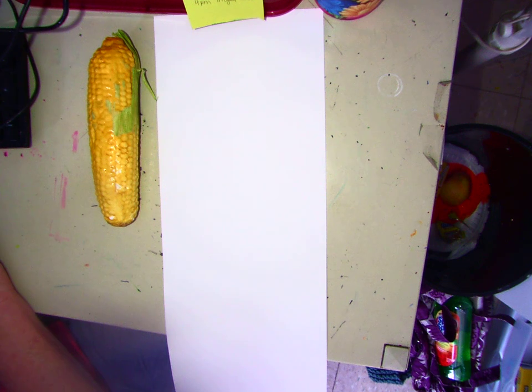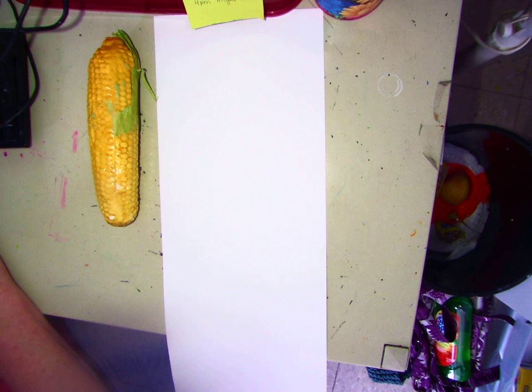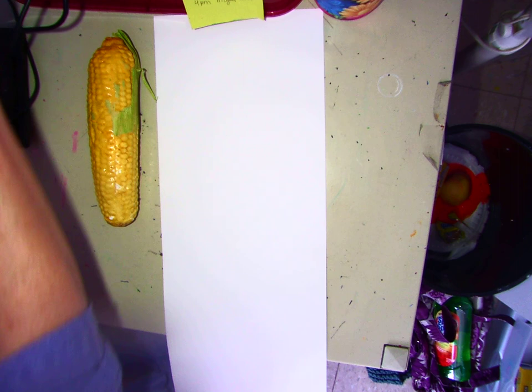Hi, first graders. It's me, Miss Anderson, and we are creating a really cool picture for the fall today. It is going to be an Indian corn.